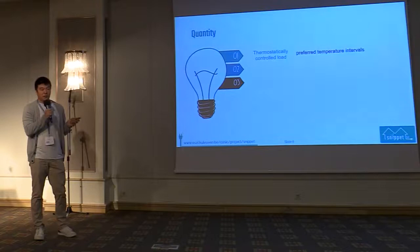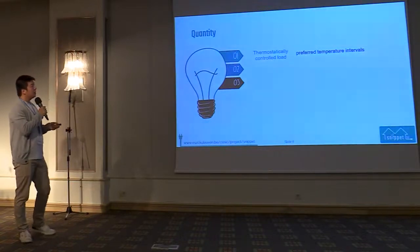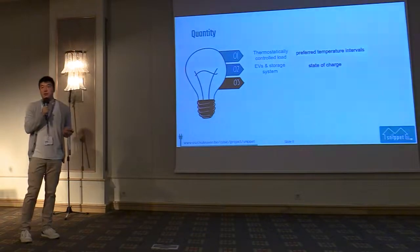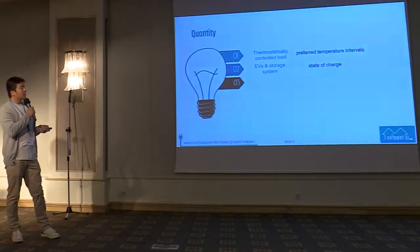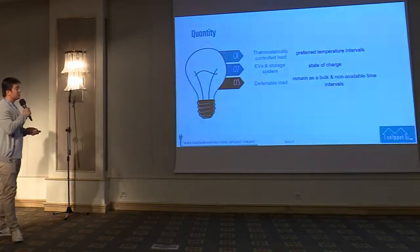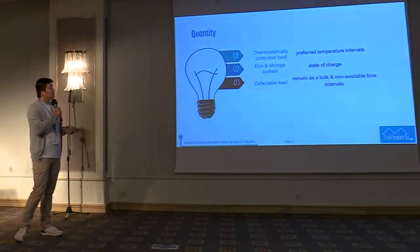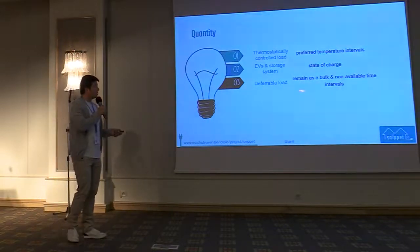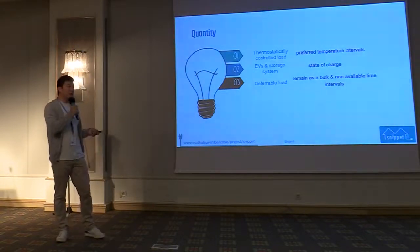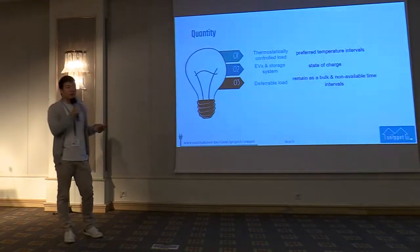The second category is EVs and storage systems, which have similar characteristics — we interpret user comfort level as state of charge. The last one is deferrable loads, which can also be explained as white goods. Their constraints on user comfort mainly require they run as a block — for example, you cannot run your dishwasher for one hour and then leave it idle for two more hours.